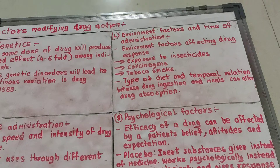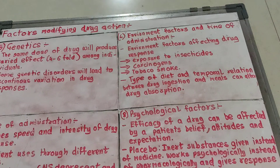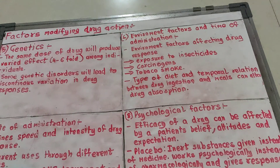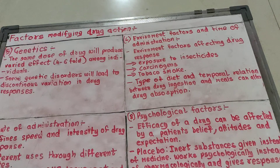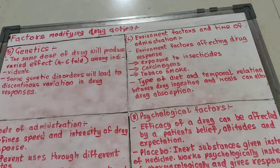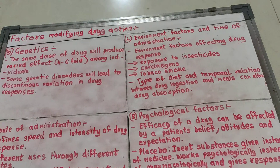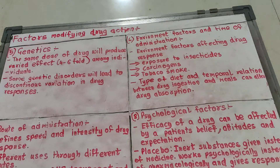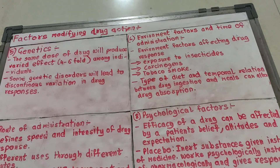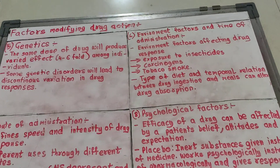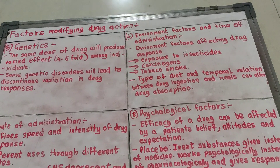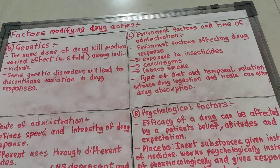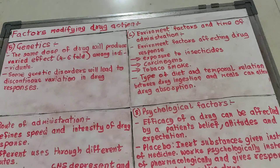The second factor is environment factors and time of administration. Environment factors include exposure to insecticides, chemicals, carcinogens, and tobacco smoke. If you are exposed to any of these, the action and distribution of the drug in the body will reduce greatly. It also depends on the type of diet and the time interval at which you take the drug between meals, which affects the administration and distribution of the drug and hence its effectiveness.